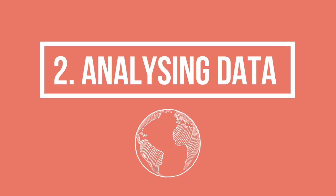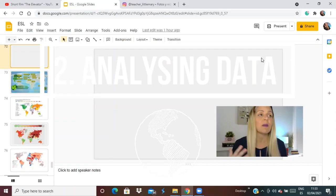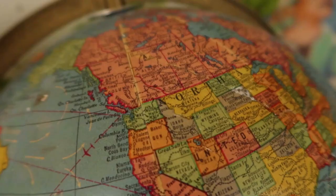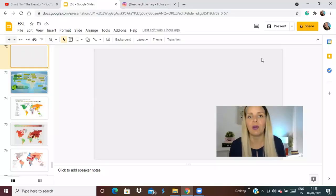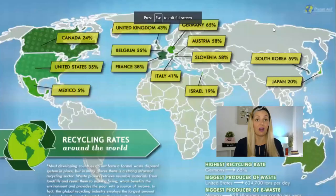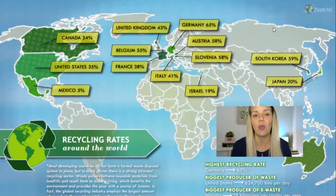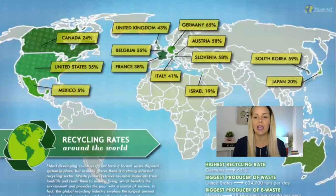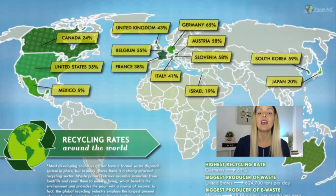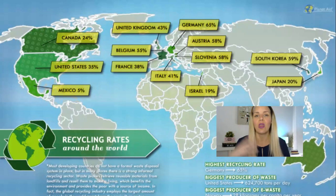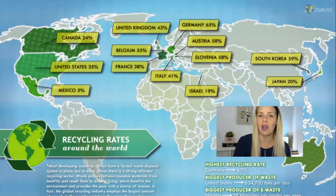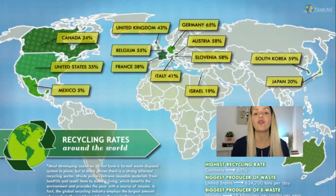The second activity is analyzing data on a map. Just go on Google and search for 'best and worst countries' or something similar and loads of interesting maps come up. For example, if I'm talking to a student about recycling, I'd use a map of recycling rates around the world. Germany is probably the one with the highest recycling rate and the US is the biggest producer of waste. The student describes what they see, groups countries, and analyzes trends — for example, tendencies in North America or Asia. You can ask them why they think Germany has the highest recycling rate.